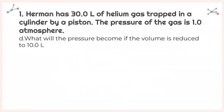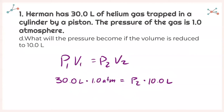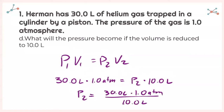For part D, it asks: what will the pressure become if the volume is reduced to 10.0 liters? Writing down my equation and plugging in what I was given — P1, V1, and V2 — and solving for P2. Isolating it, I get 30.0 liters times 1.0 atmospheres divided by 10.0 liters. Plugging that into my calculator, with sig figs, I get 3.0 atmospheres.